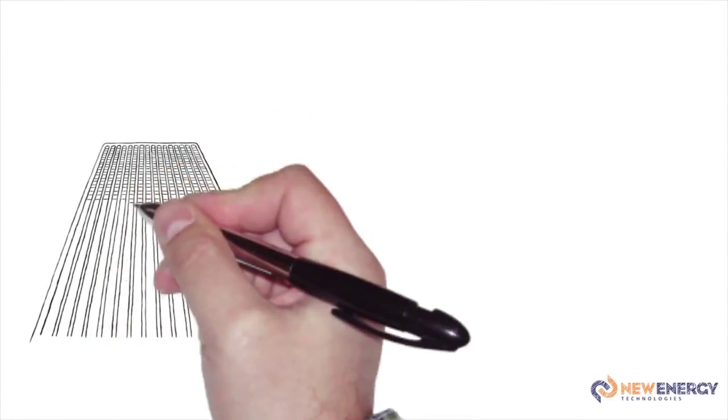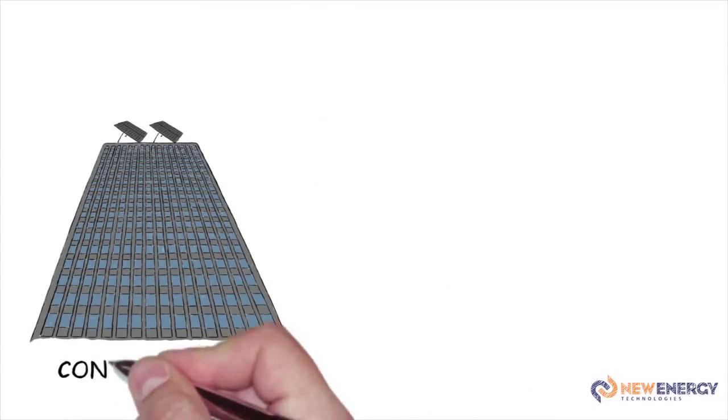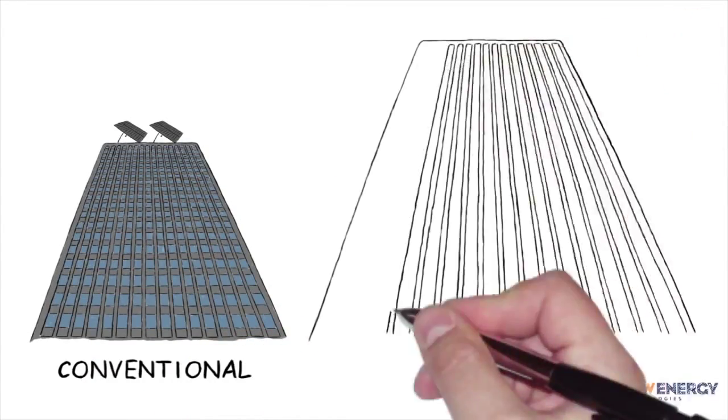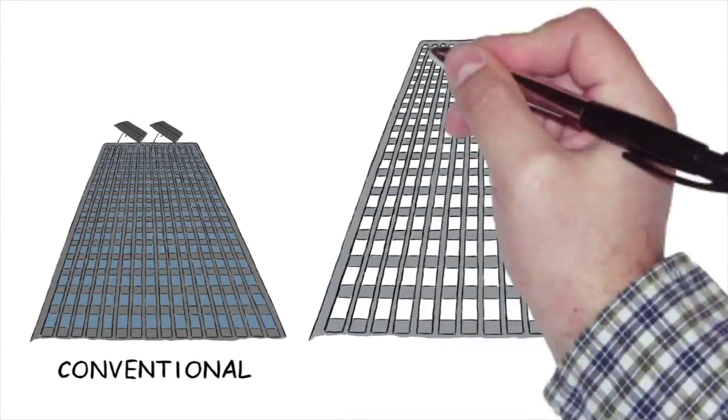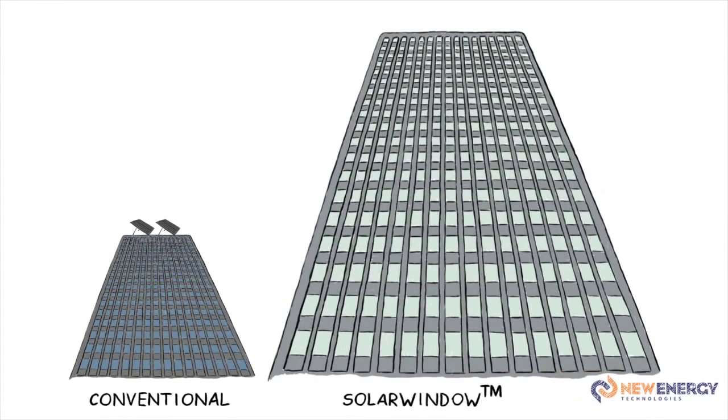Researchers estimate that a 40-storey glass building fitted with clean, electricity-generating Solar Window coatings could realize two to four times greater savings each year than conventional roof-mounted solar panels.